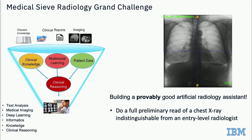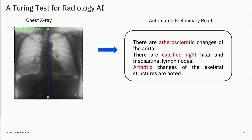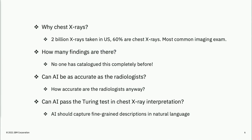In the medical radiology grand challenge, which was targeted towards building AI assistants that are provably good enough, the problem posed to us was: can you pick one modality such as a chest X-ray and do a full preliminary read — done at a level where you couldn't distinguish between a human read and a machine read? So if you've got a chest X-ray, you need to get to the report with very fine-grained descriptions of findings with laterality, location, and so on.